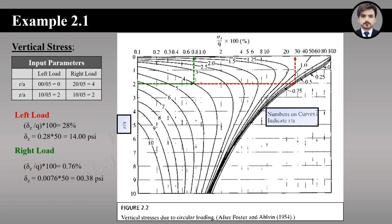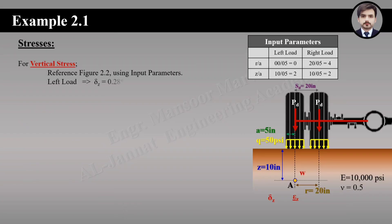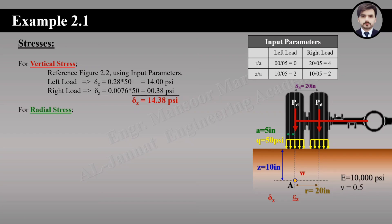From Figure 2.2, the vertical stress for the left load is 14 psi and for the right load is 0.38 psi. Whenever there are dual wheels in one-layer theory, we use superposition by adding both stresses. The combined vertical stress at point A is therefore 14.38 psi.